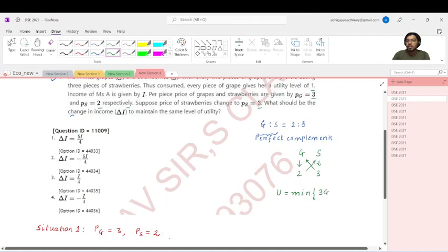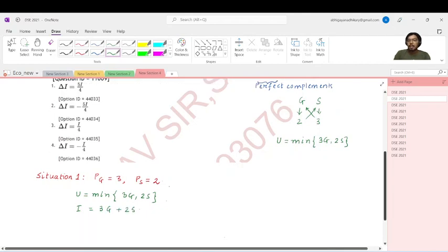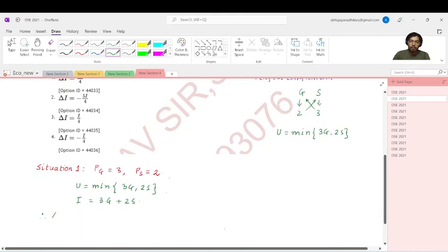Now we are going to solve for the optimal. Therefore, at optimal, 3G is equal to 2S. So if I call the initial budget constraint as 1, from 1 what do we get? Instead of 3G if I write 2S, it's basically coming out to be S star equals i by 4. And again from 1, instead of 2S if I write 3G, the optimal amount of grapes comes out to be i by 6. So what is my utility at optimal? It is minimum of 3 times i by 6 comma 2 times i by 4. So that is essentially coming out to be i by 2.